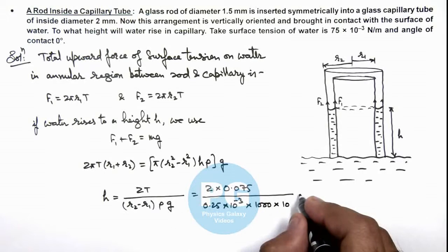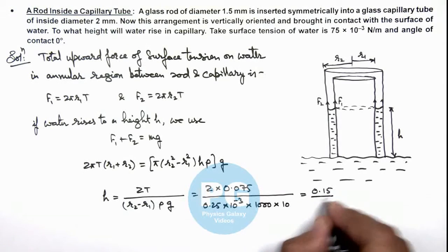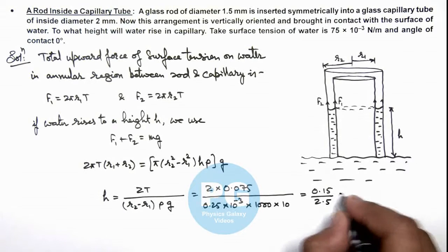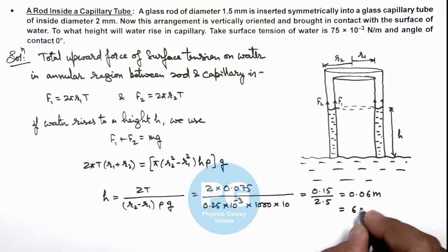So numerically when you solve it, this will come out to be 0.15 by 2.5, that is 0.06 meter or 6 centimeter. That is the result of this problem.